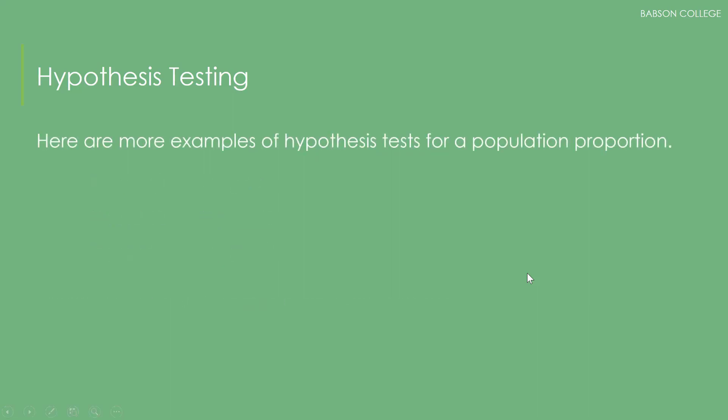Here are some more examples of hypothesis tests for population proportion. Recall that proportions must be between zero and one. Again we start out with the equal to, not-equal-to hypothesis.